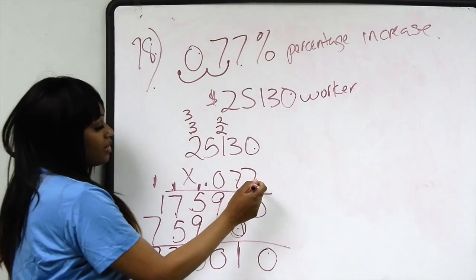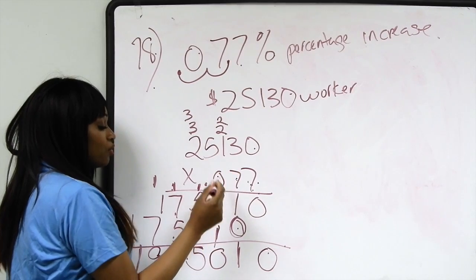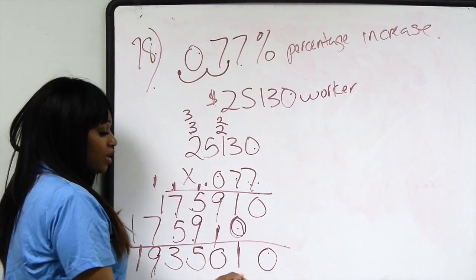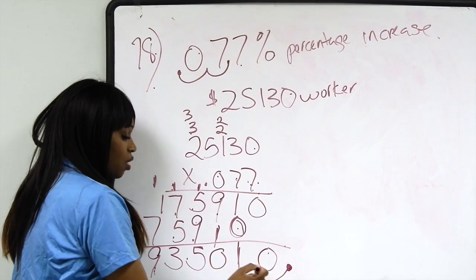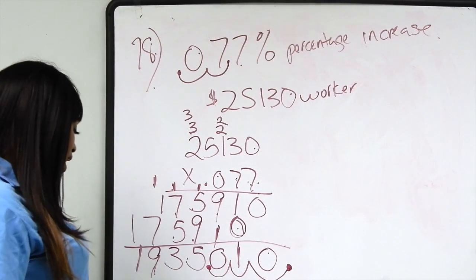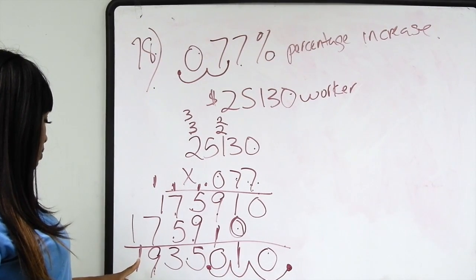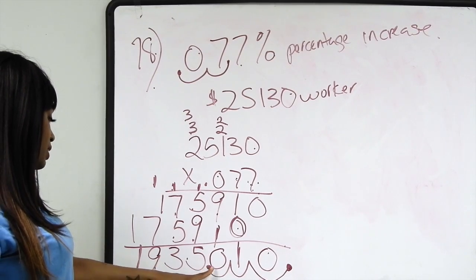When looking up here, we said our decimal place has 2 places. We moved it 1, 2, 3. There are 3 decimal places to the left. So we're going to have to move our decimal place in our final answer, 3 places to the left. 1, 2, 3. And when we do that, we simply get 1,935.01.